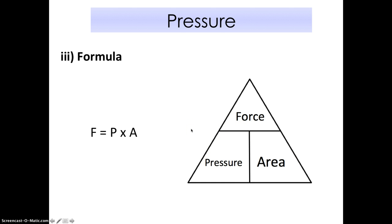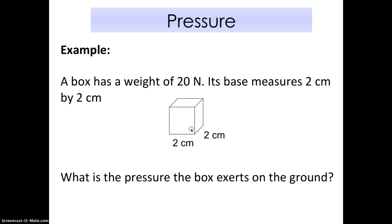Let's see how we can use this formula. This is an example you might see in your test or worksheet. A box has a weight of 20 Newton. Notice weight always goes by Newton. Its base area measures 2 cm by 2 cm. There's a force acting downwards, 20 newtons. What's the pressure that the box exerts on the ground? How am I going to solve this question?